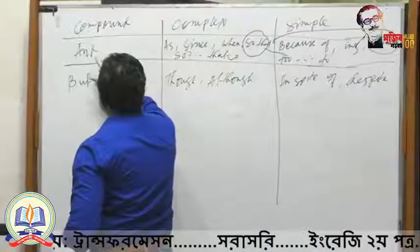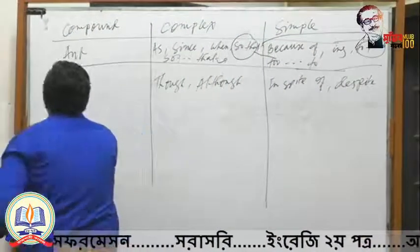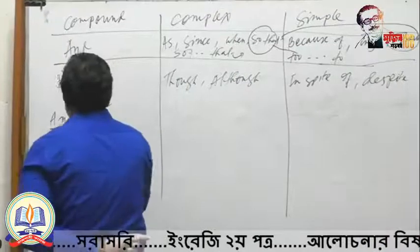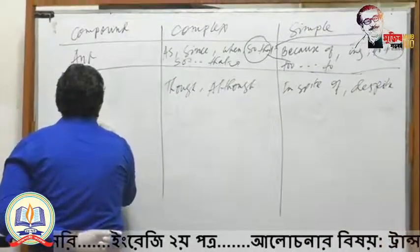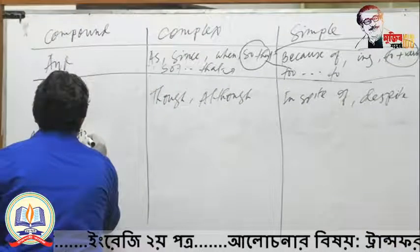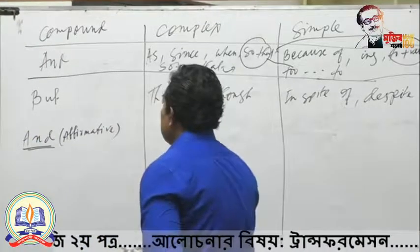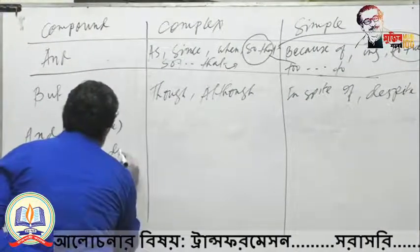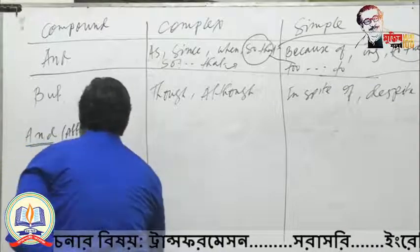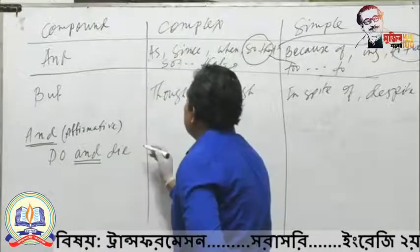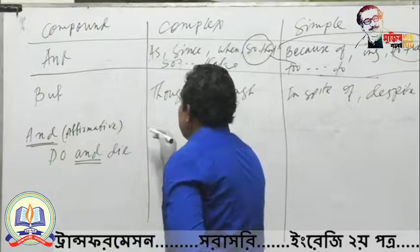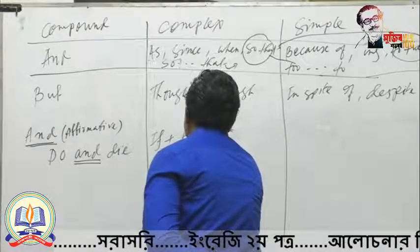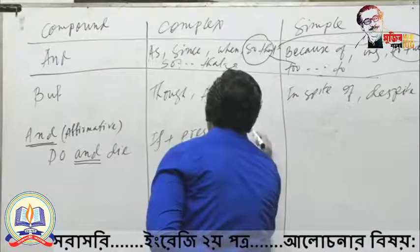The different case is for imperative sentences. Sometimes we get an imperative sentence using 'and,' where 'and' denotes affirmative sense — for example, 'do and die.' Here 'and' indicates affirmative sense. If you want to make a complex sentence from 'and' in an imperative sentence, you use the structure: if + present + future.